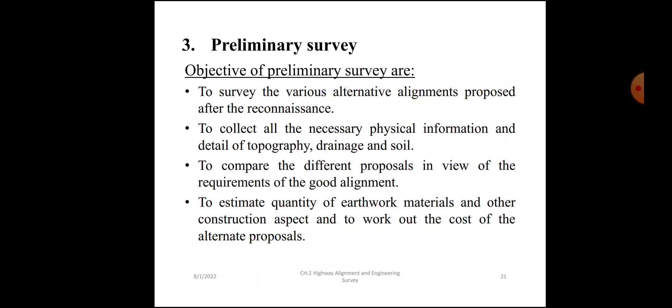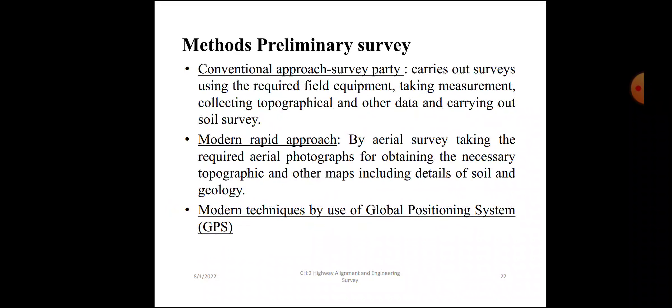Preliminary survey objectives are: to survey the various alternative alignments after reconnaissance; to collect all necessary physical information and details of topography, drainage, and soil; to compare different proposals in view of the requirements of good alignment; to estimate quantities of earthwork, materials, and other construction aspects; and to work out the cost of alternate proposals. Methods for preliminary survey include the conventional approach using a survey party, and the modern rapid approach using aerial survey or global positioning system GPS.